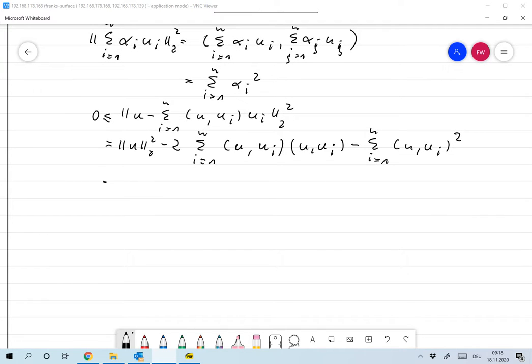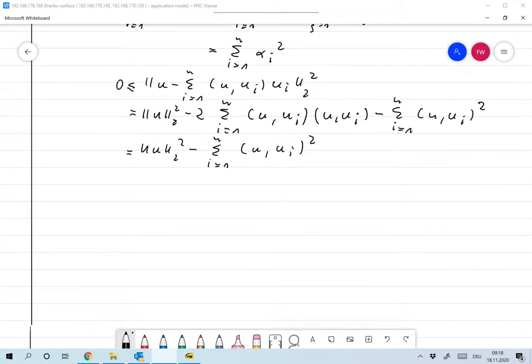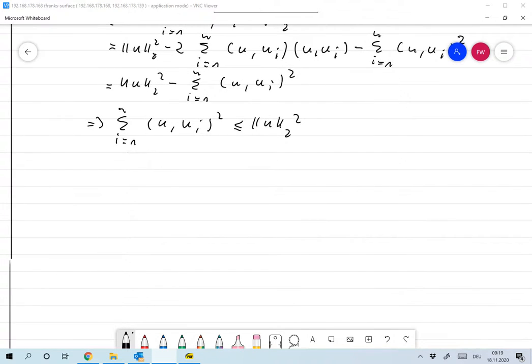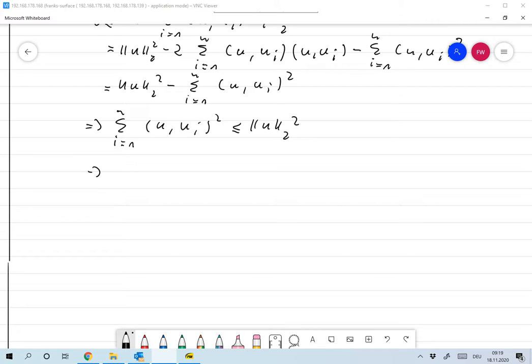Okay, we see that this is the same as the norm of u squared minus the sum from 1 to N of |⟨u, u_i⟩|² squared. And this obviously means that the sum of |⟨u, u_i⟩|² is smaller or equal to the norm of u squared, and that of course means that the sum exists and Σ|⟨u, u_i⟩|² is also smaller or equal to the norm of u squared.